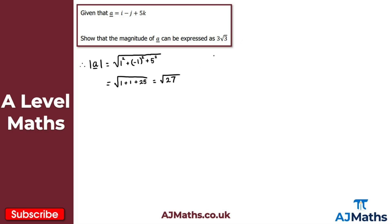To simplify √27, we write it as √9 × √3. Since √9 = 3, this gives us 3√3 as required. That's the solution to question 1.